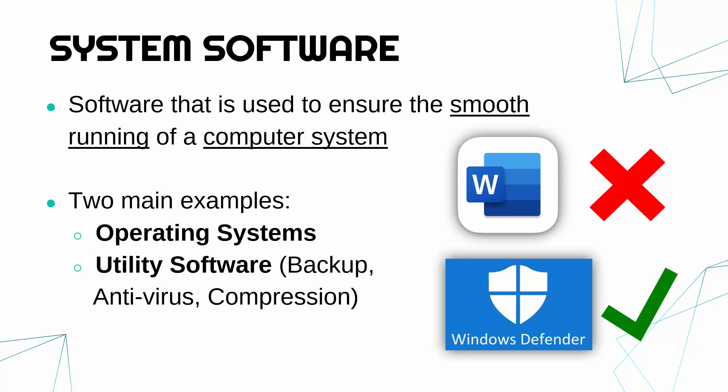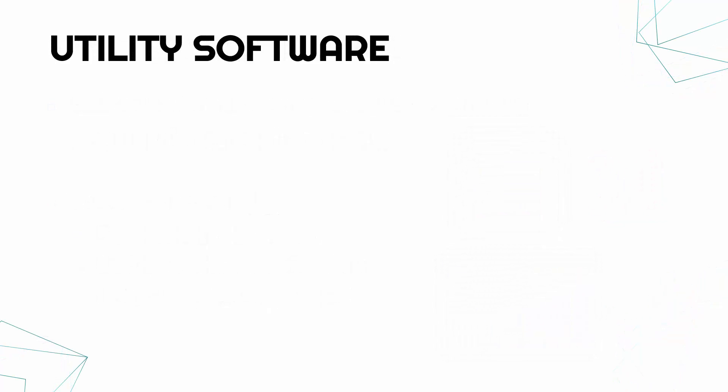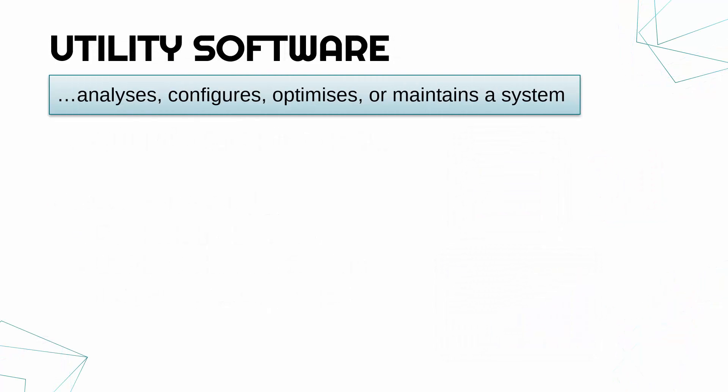Operating systems will be covered in the next video. So just to define utility software — this is software which analyzes, configures, optimizes or maintains a system. It really helps it run, doing the sorts of jobs which are going to generally improve our computer system.